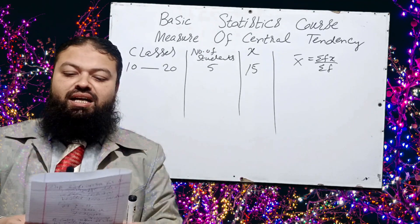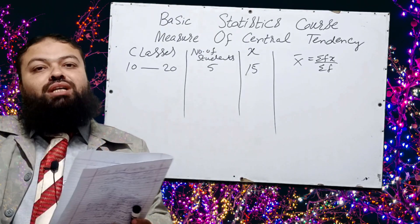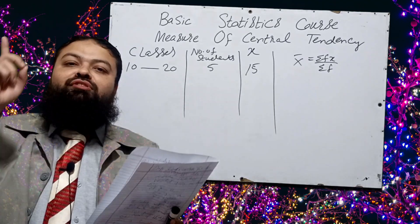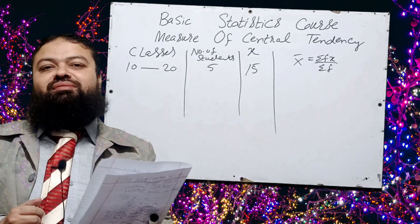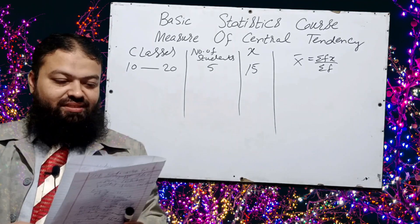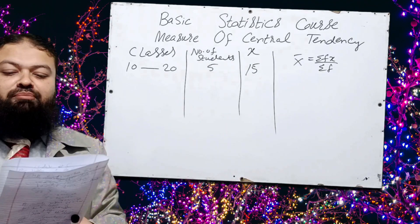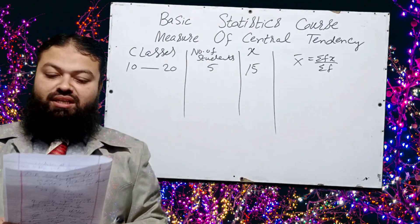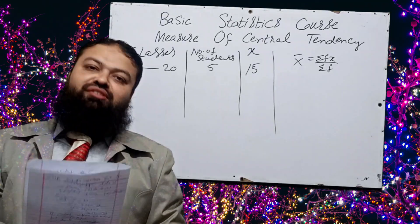Question number three: when a curve has the largest tail to the right, that is a positively skewed distribution. Question number four: if the mean is less than the mode, the distribution is negatively skewed.